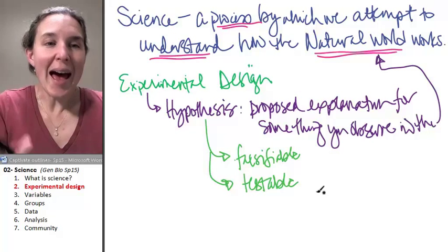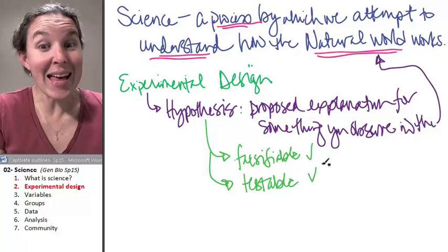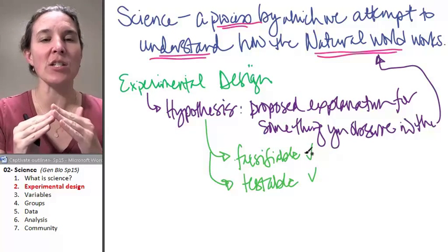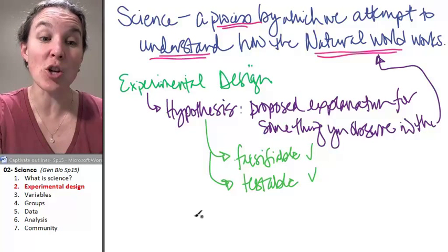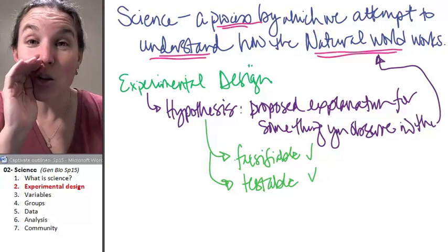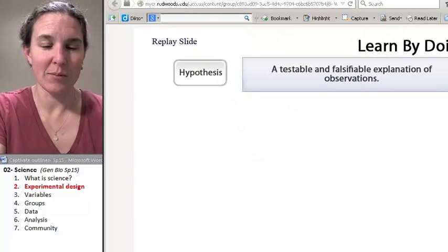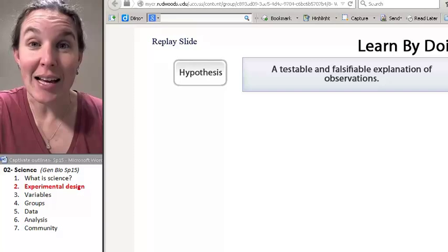In the process, once we have a hypothesis that we conclude is falsifiable and testable, then we need to set up the experiment. And to do that, we need to identify some variables. So I'm going to show you about that next, and I promise it will have nothing to do with Santa. Oh, I pushed the wrong button. See, that's Santa. He's pissed.